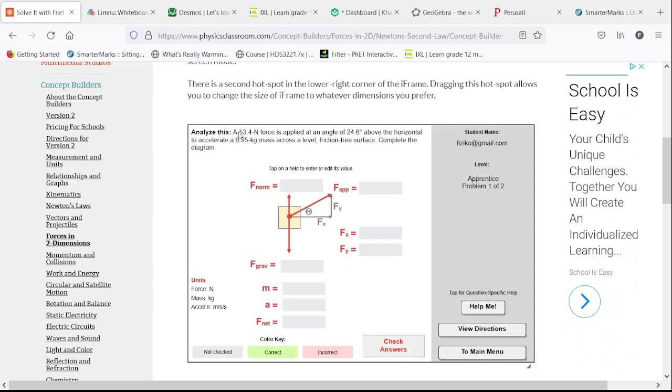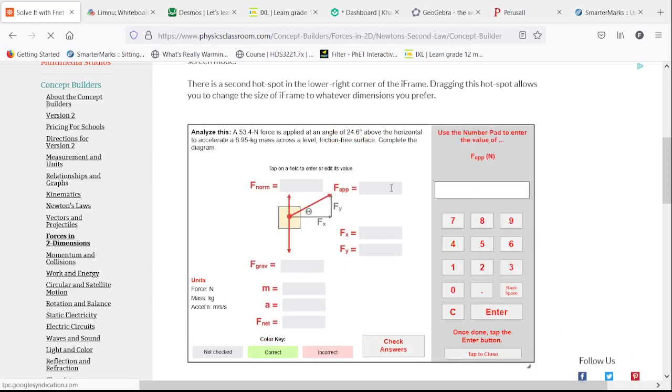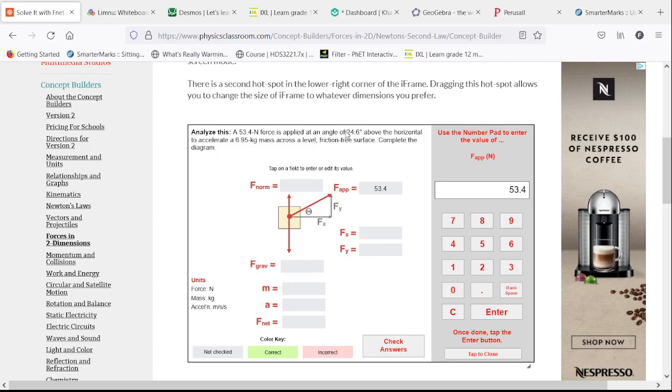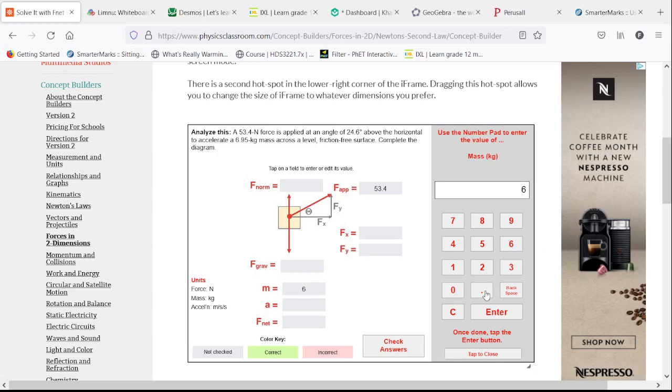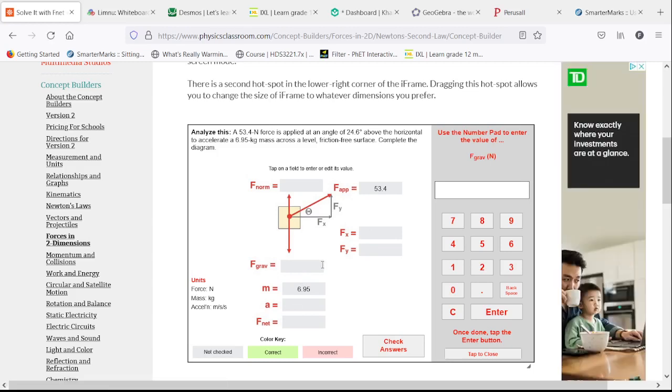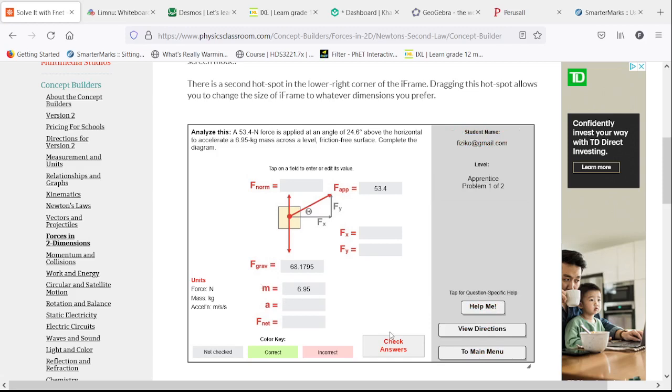So analyze this: a 53.4 Newton force is applied at an angle of 24.6 degrees above the horizontal to accelerate a 6.95 kilogram mass. Our force of gravity will be our mass times g. So that is 6.95 times 9.81, which works out to 68.1795. We can check so far.